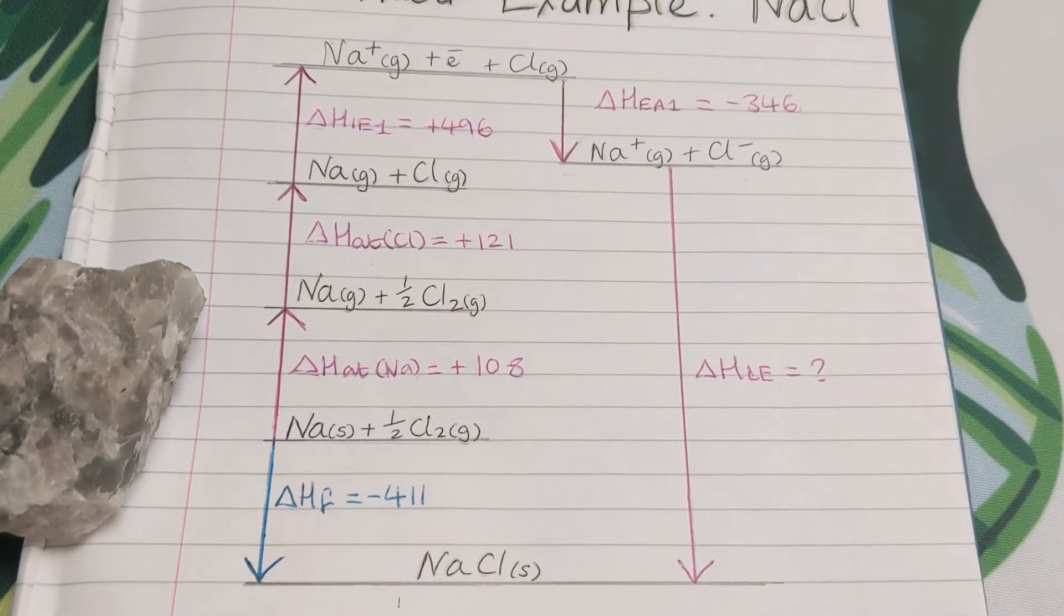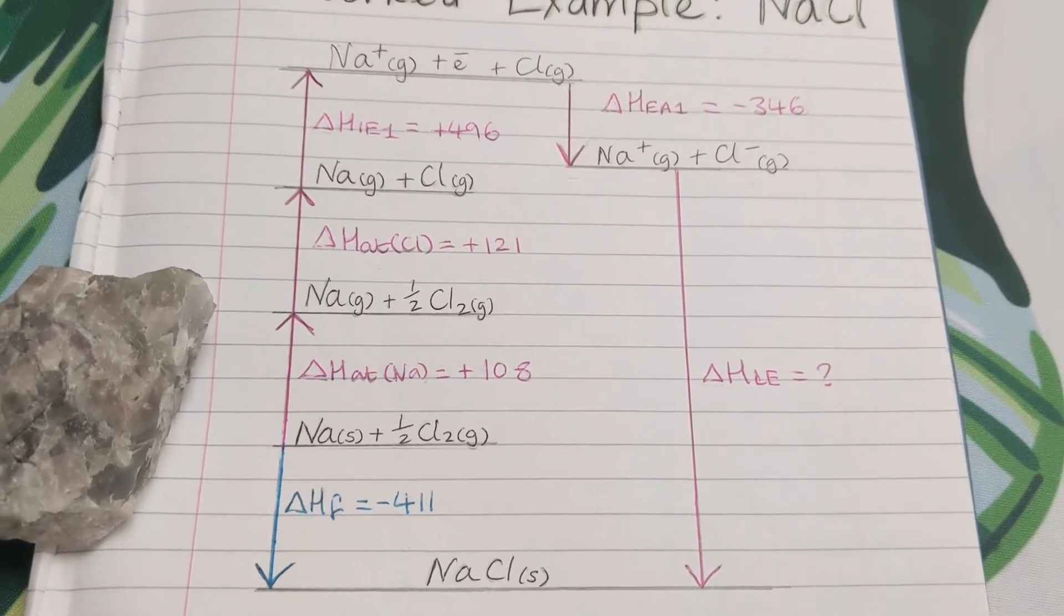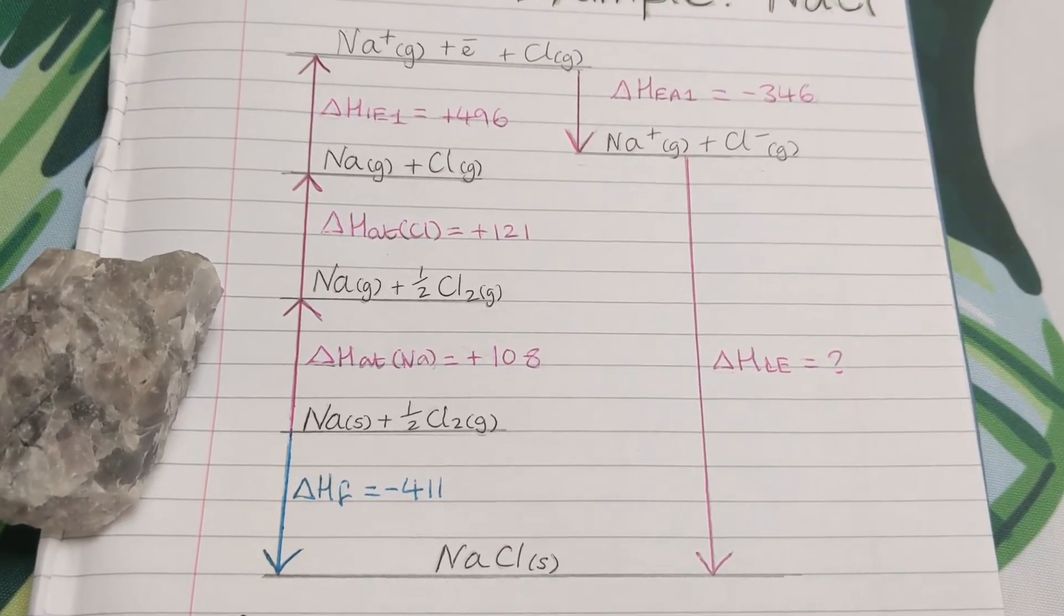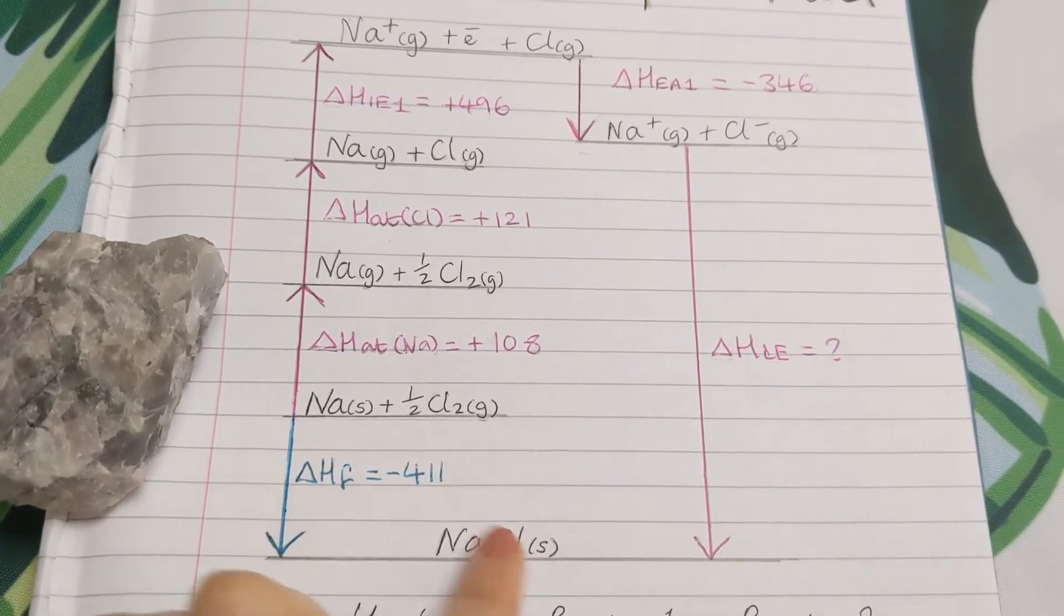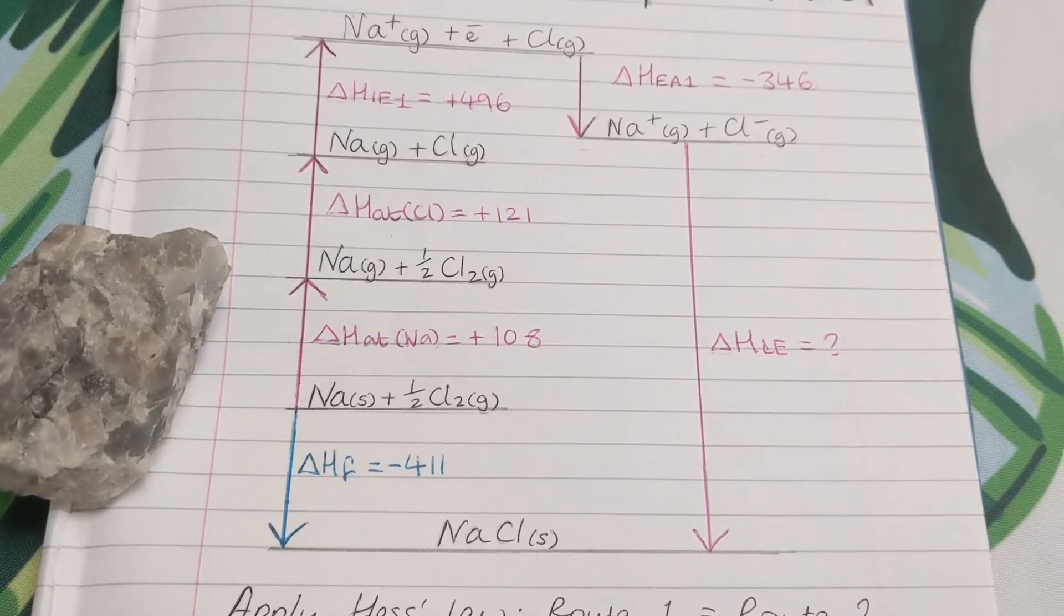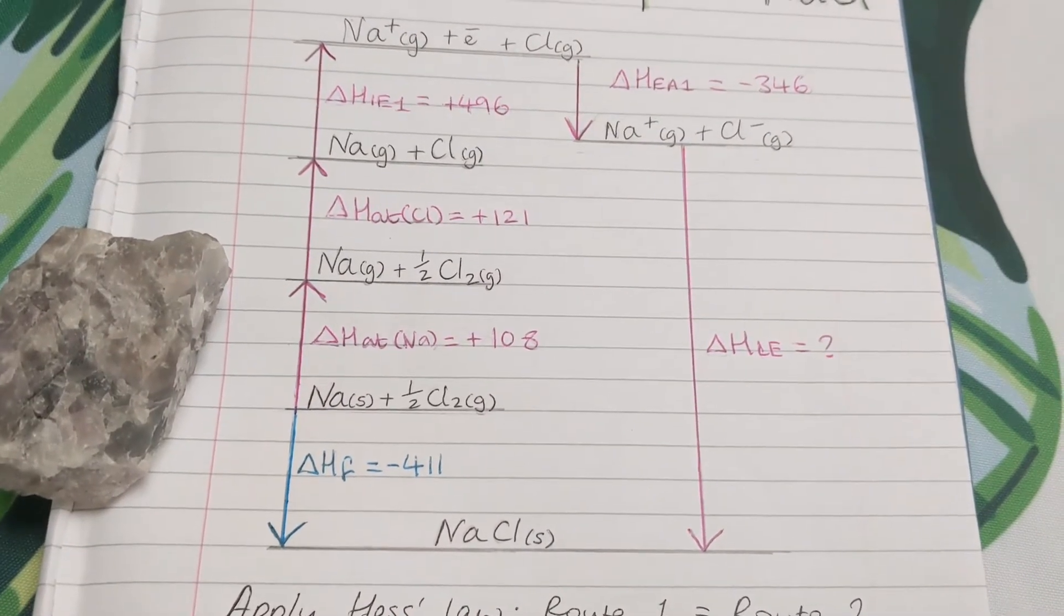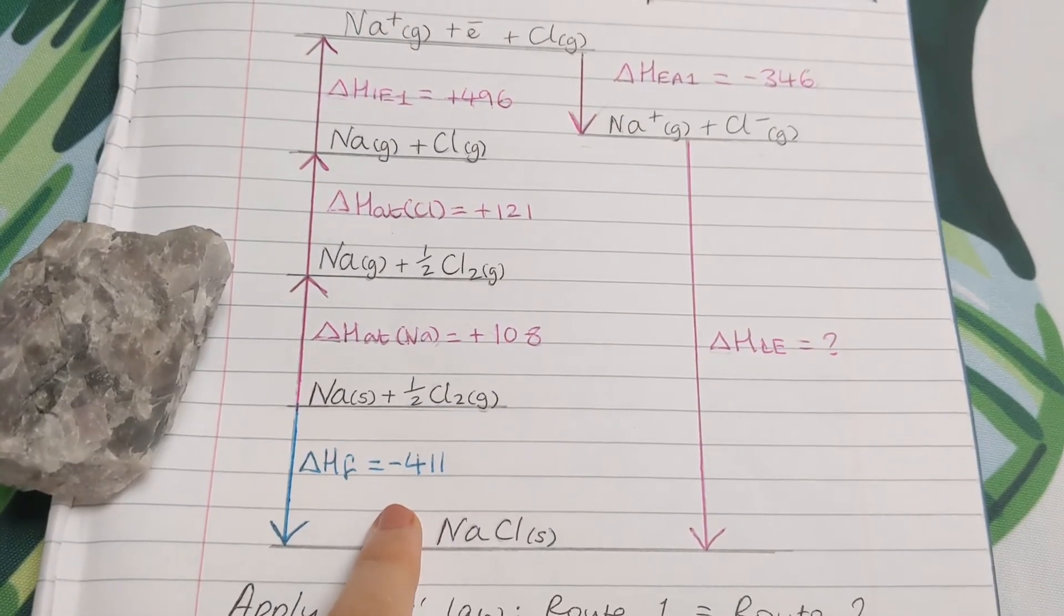Now these numbers, I didn't do anything fancy to get them. I just got them from a textbook. If you've got a data book and you're happy to use it, you can find all these values in there, or you can just look them up on the internet. If you're sitting exams or doing assignments, these numbers will be given to you, so you don't have to worry about that.